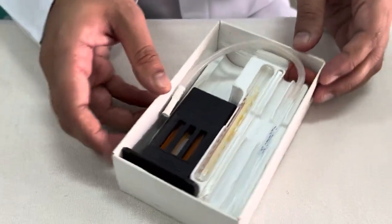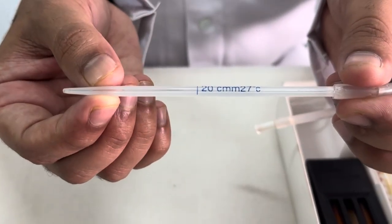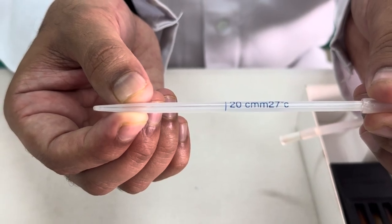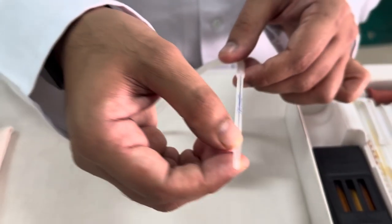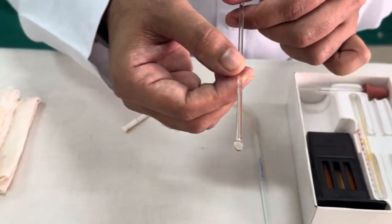So one by one we will see. First and foremost is the hemoglobin pipette. This hemoglobin pipette, you can see there is a marking 20 cubic millimeter or it will be 20 microliters. Few of the pipettes, few companies, it will show 20 microliters.